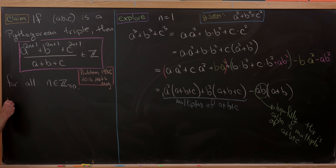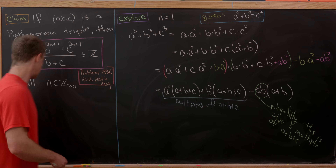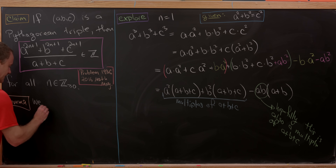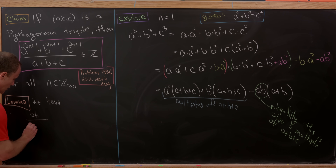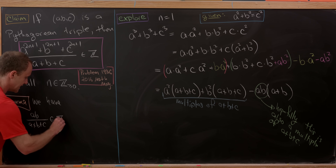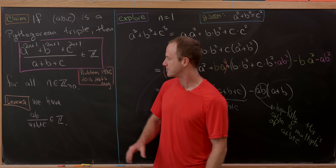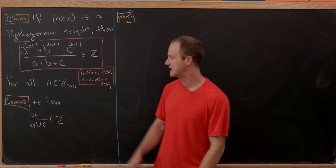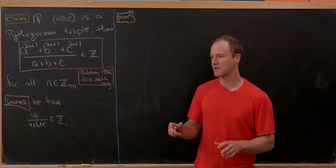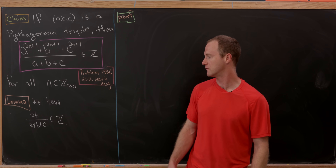So let's add that as a lemma: a times b over (a + b + c) is an integer, in the setup where we have a Pythagorean triple. Now that we've motivated the need for this lemma, and we've seen that if we have this fact we can prove our claim pretty easily, let's go ahead and prove it.